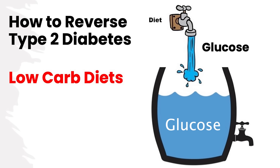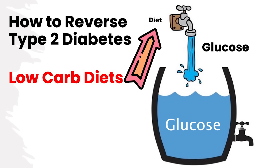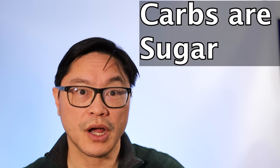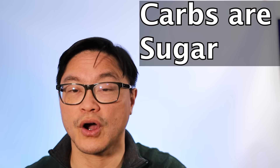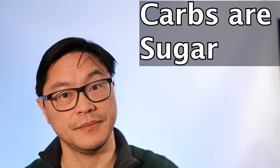So where is this glucose coming from? Well, it's coming from your diet. And that's why it's so important to focus on the cause of the problem, which is your diet. Low-carbohydrate diets can be very effective for a very simple reason: carbohydrates are sugar, and your body has too much of it already.